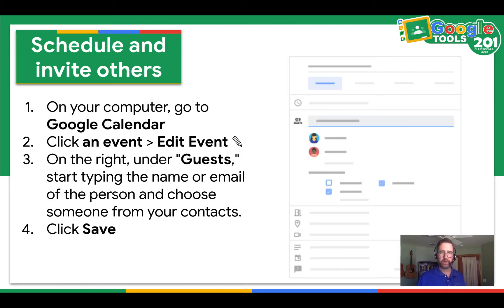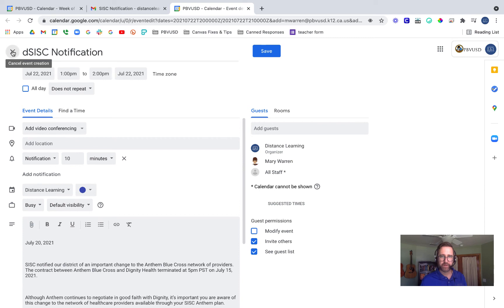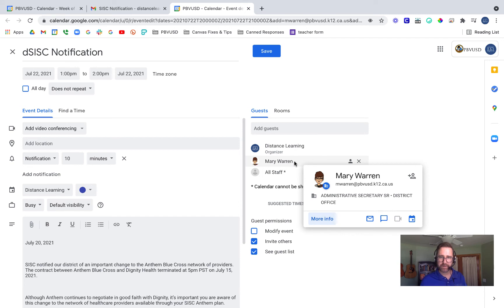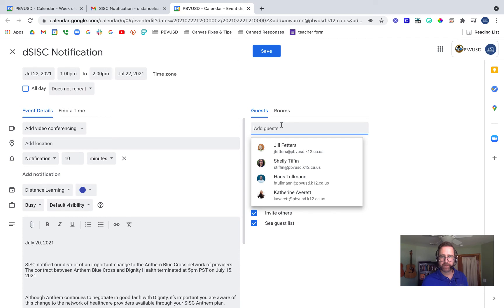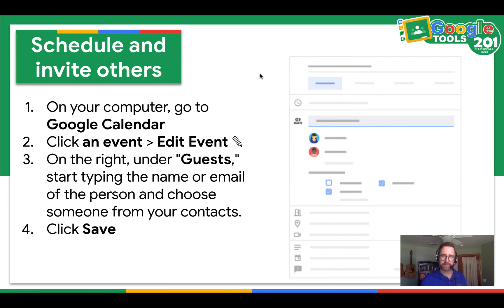Next, we're going to learn how to schedule and invite others to a calendar event. On your computer, go to Google Calendar, click on an event, and click Edit the Event. On the right, under Guest, start typing the name or email of a person and choose someone from your contacts, then click Save. Here I am editing an event — I see I already have Mary Warren as a guest. I can X her out and then choose someone else. When I find them, I just click on their name and add as many as I would like. Go ahead and pause your video and try to edit an event and add guests.